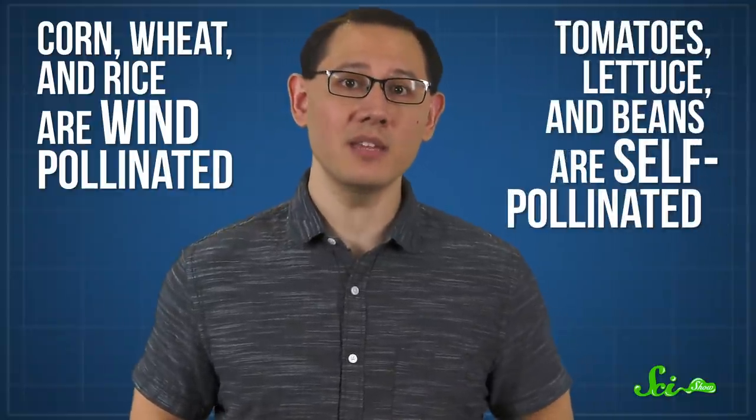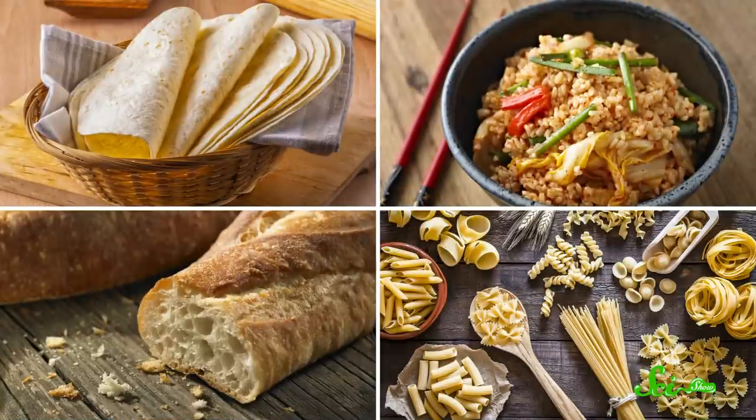Many of the world's staples, like corn, wheat, and rice, for example, are wind-pollinated, while others, like tomatoes, lettuce, and beans, are self-pollinated. So tortillas, fried rice, French bread, and pasta would be fine in the advent of a bee-pocalypse.